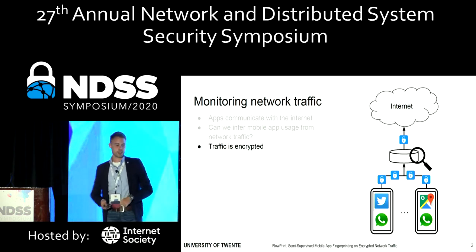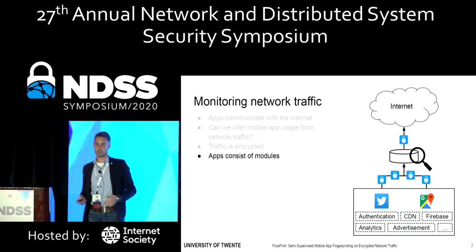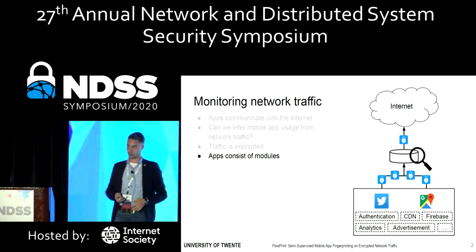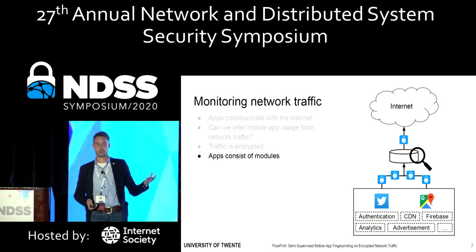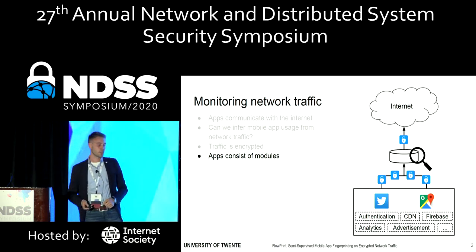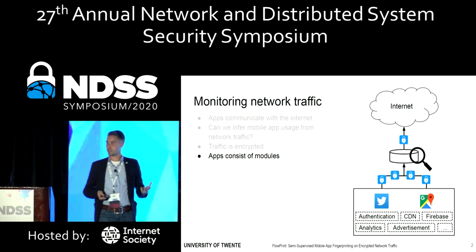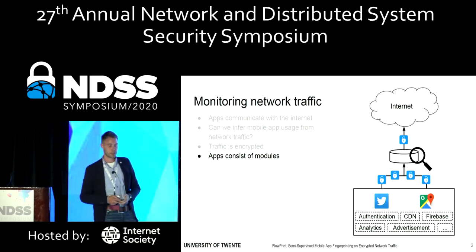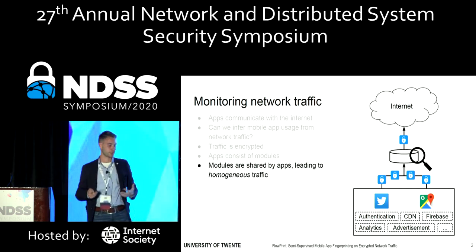Furthermore, specifically for mobile applications, they are often built out of what we call components or modules. These modules can be used to, for example, authenticate a user within an application or show some analytics. But what that means is that a lot of the network traffic we see going over the internet looks similar for different applications. We call this network traffic homogeneous.